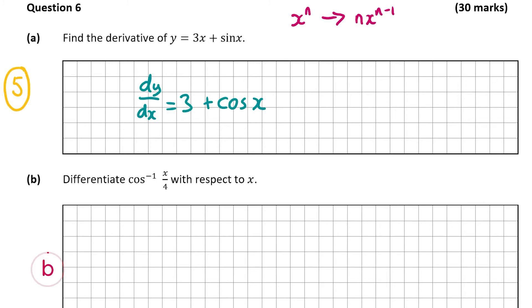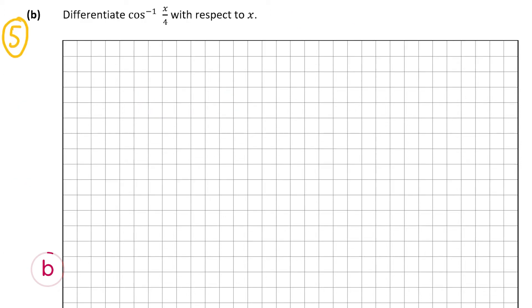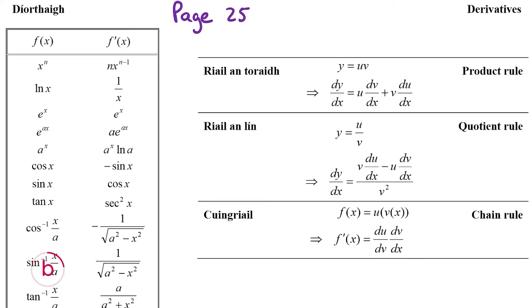Now we're going to look at part b, which is also worth five marks. Here we have to differentiate cos inverse of x over 4 with respect to x. We have a formula for this in our formula tables book on page 25. The formula is: cos inverse of x over a, when you differentiate that, gives minus 1 over the square root of a squared minus x squared.